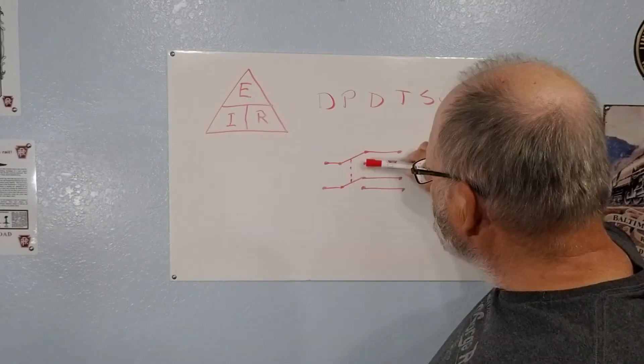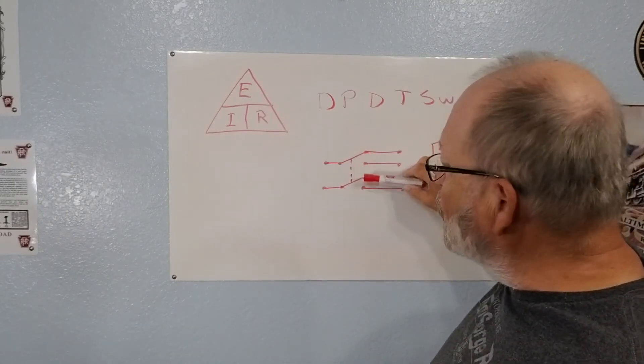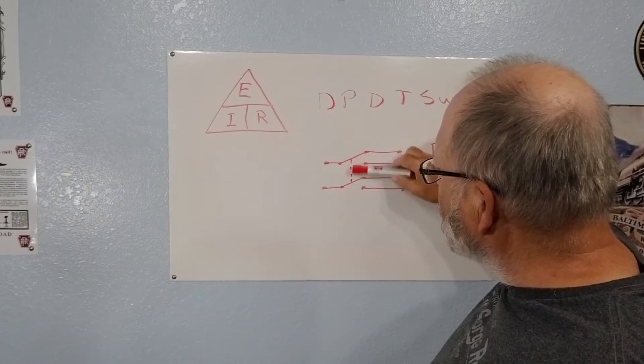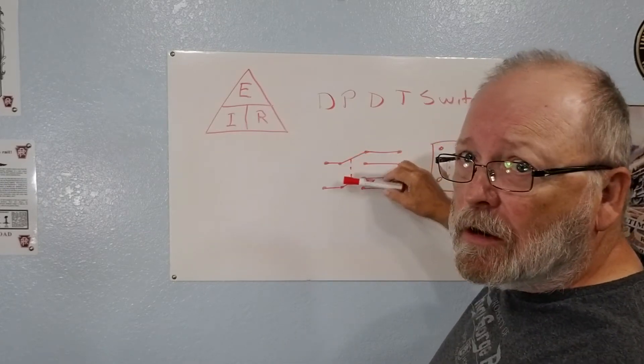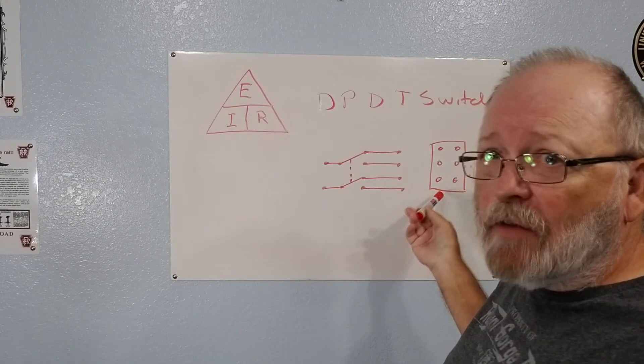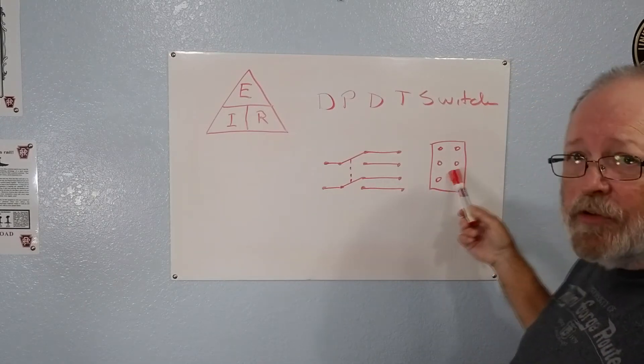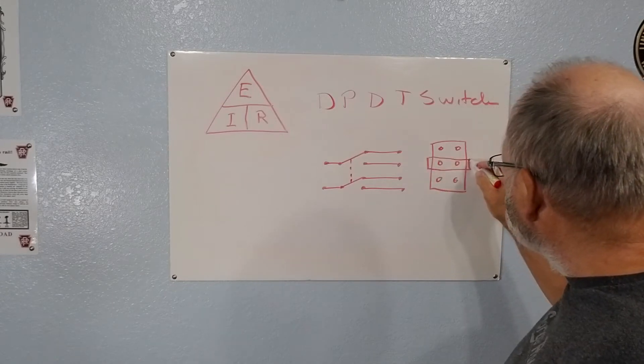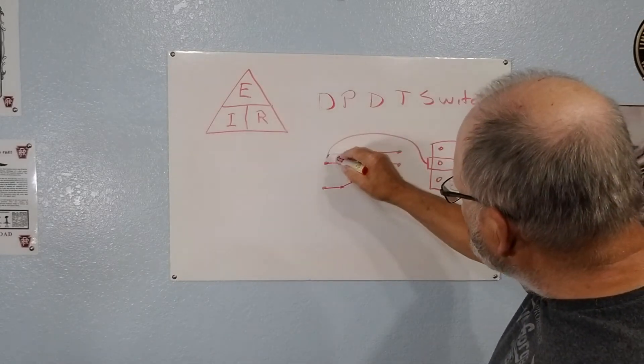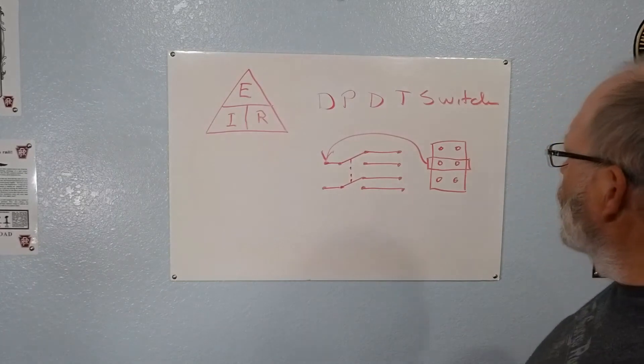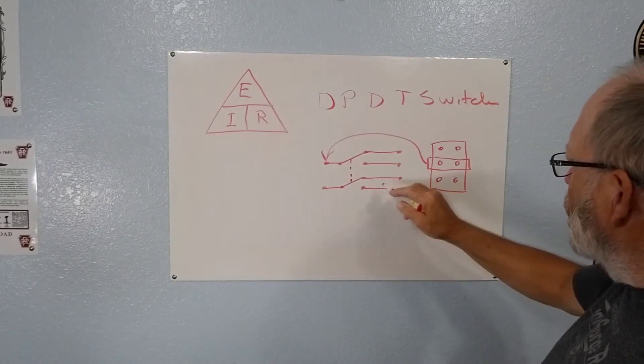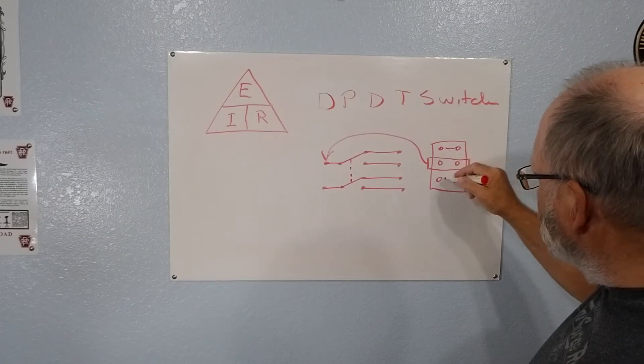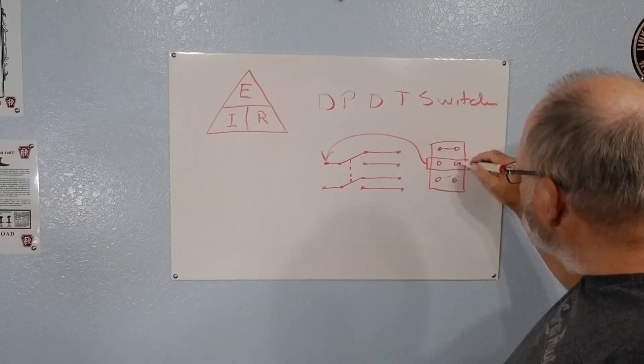This is what a double pole double throw switch is going to look like in your diagram. You're going to have two different terminals for each wiper on your switch and it's connected internally. So what you're going to have is six terminals and this is what the bottom of the switch is going to look like. These right here in the center are going to be these right here and then the two outside ones are going to be these two right here.